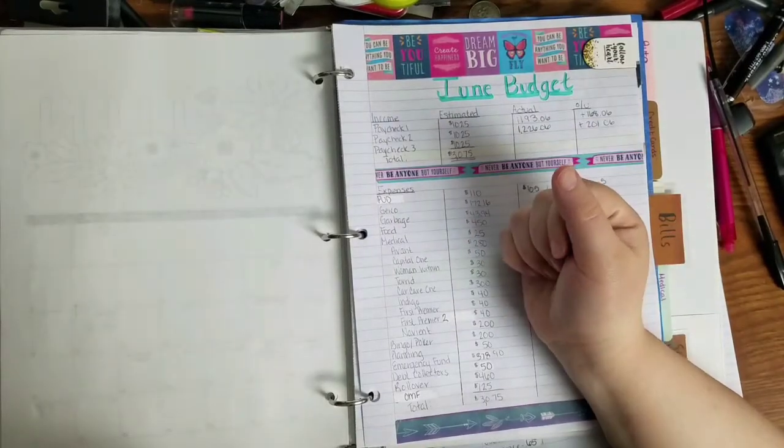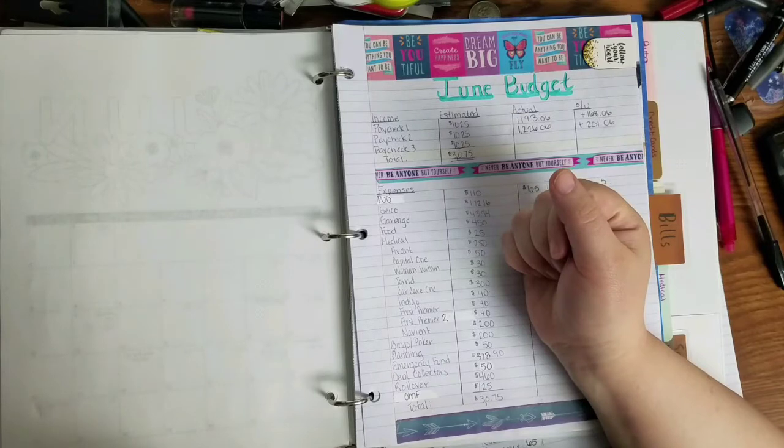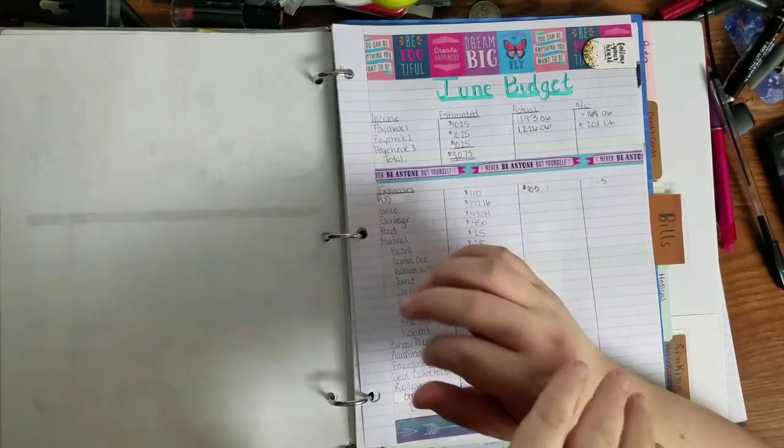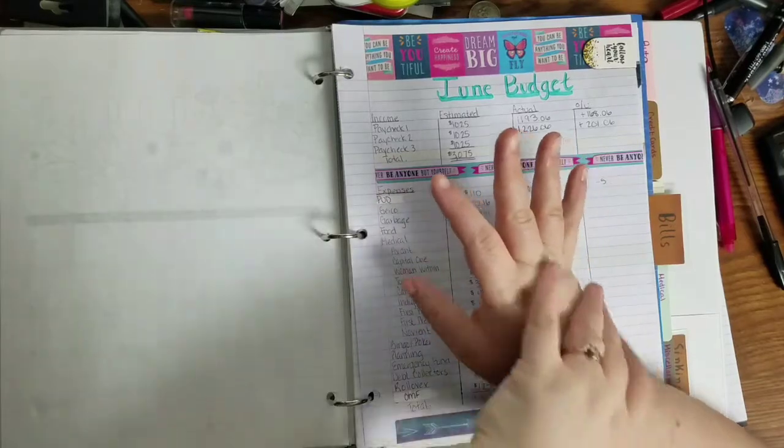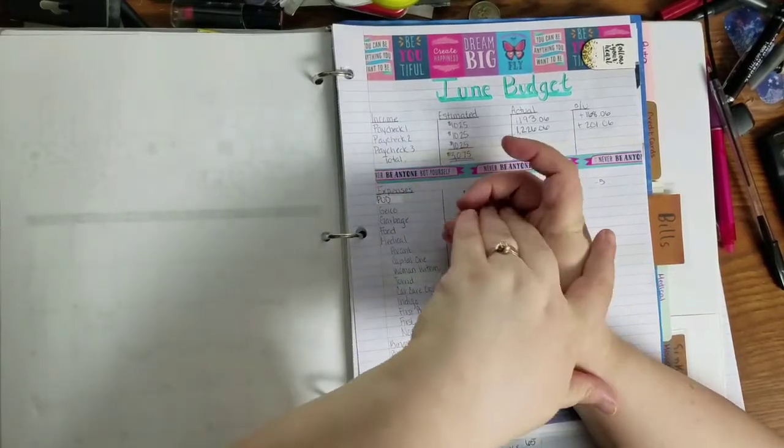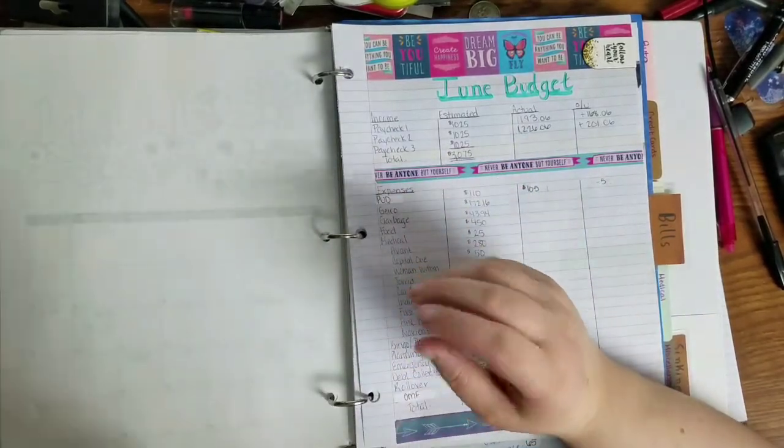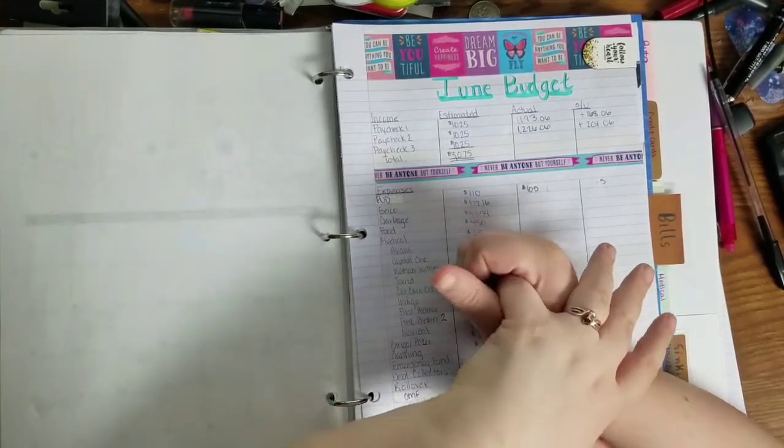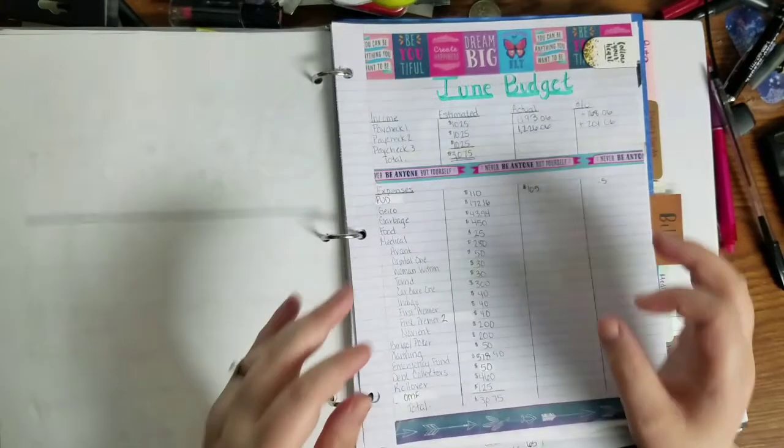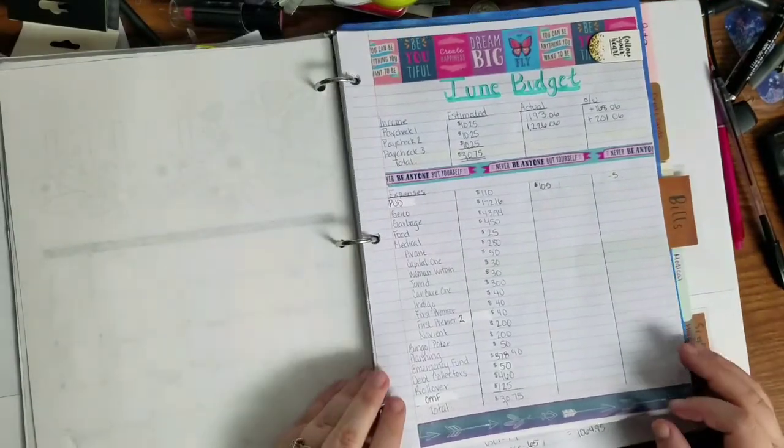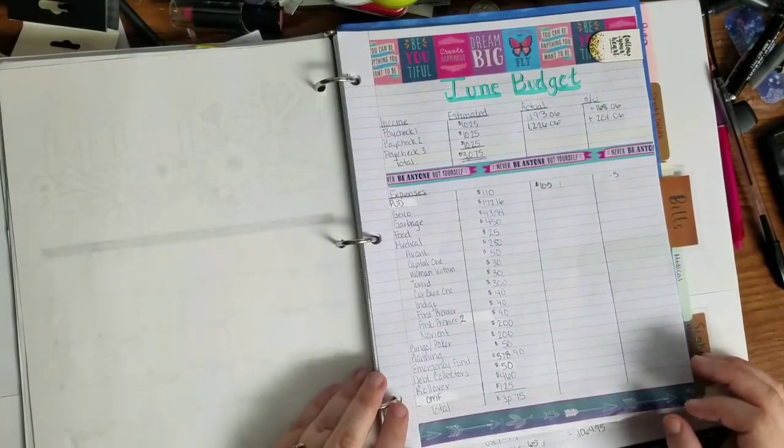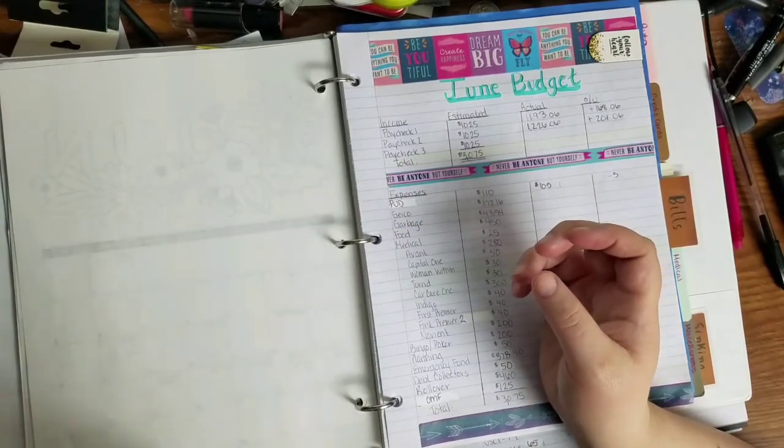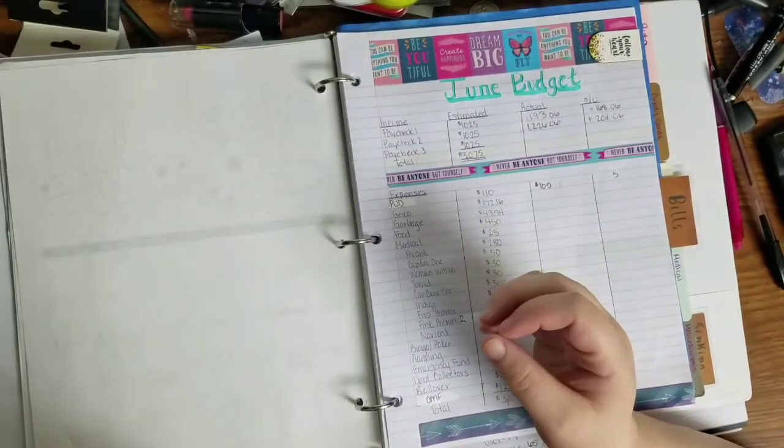Hi folks, welcome back to my channel. So today's video is my June budget for June 15th. It is 5:56 a.m., so I have already checked my paycheck and I know how much has been deposited and how much has gone to each account.